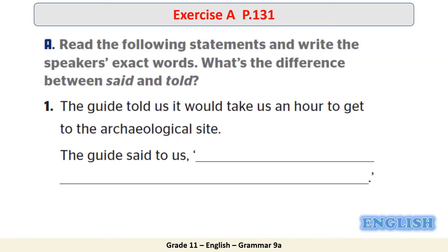Let's go now with Exercise A, page 131. You have three statements and you are going to rewrite them into the direct speech — the opposite of what we did in the previous task. When we do this kind of task, we need to look at the pronouns and at the tenses of the verbs. So looking at this sentence, we have 'us,' 'would take,' and 'us' — these things need to be changed to form the direct speech.